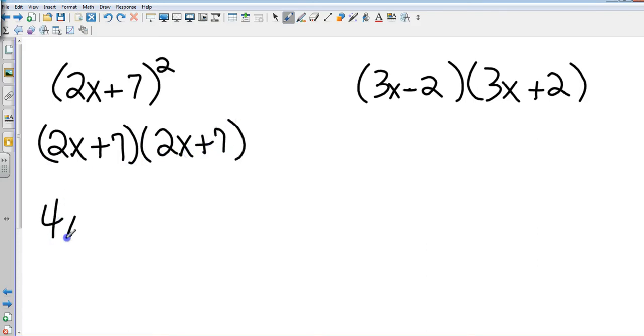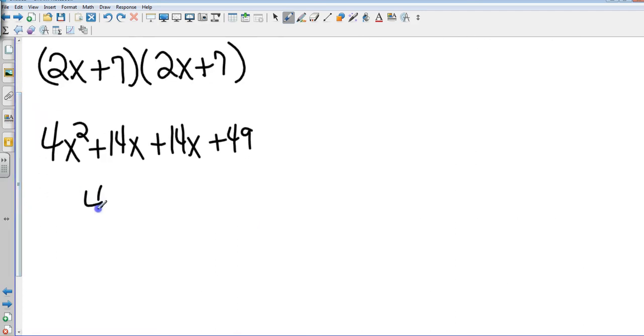That's going to give me 4x squared plus 14x plus 14x plus 49, giving me a grand total of 4x squared plus 28x plus 49.